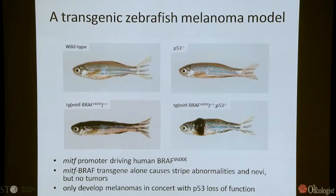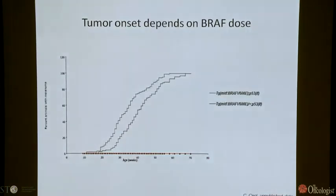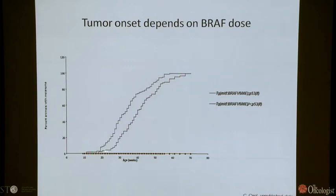We began looking at this model in great depth. This is work done by Craig Seal, a postdoc in the Zahn laboratory, where he first characterized the onset of tumor development. These are tumor development curves over the course of a year. Virtually all animals — essentially 100% — develop invasive melanomas by about 12 months of age, with a latency of about four months. It is dependent on the dose of BRAF: double or homozygous BRAF animals develop tumors much more quickly.